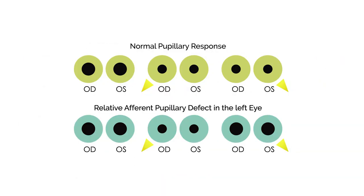The best way to explain the Marcus Gunn Pupil is with a diagram. Here we have the eye — the right eye and the left eye — and the top row represents a normal eye with a normal pupillary response.